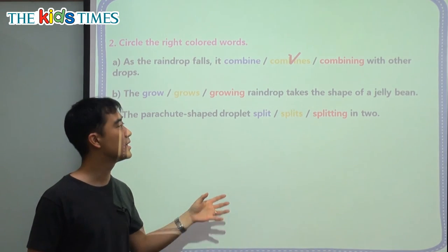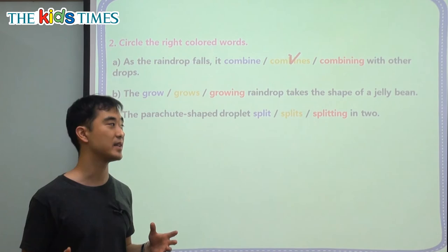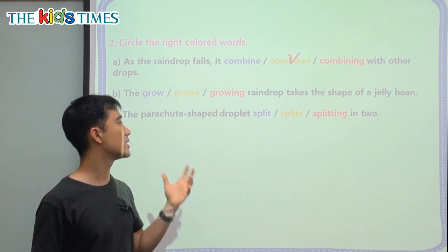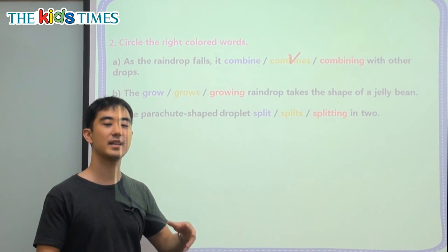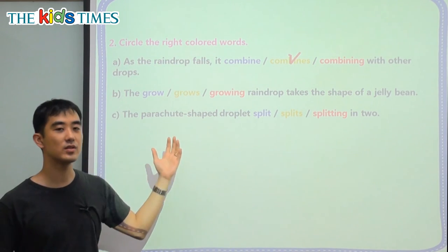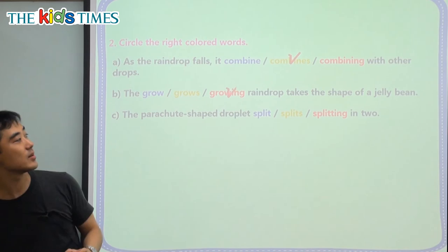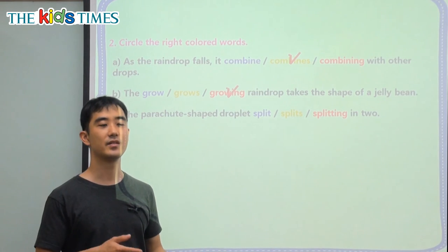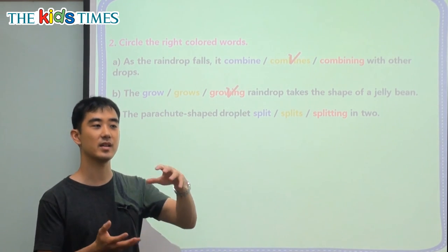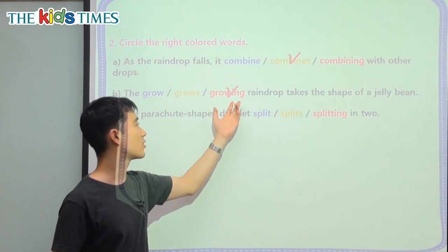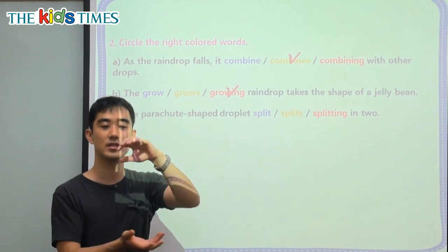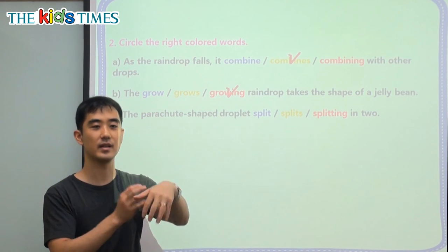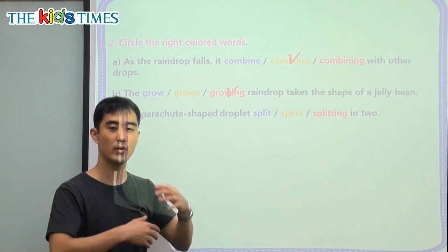B: the blank raindrop takes the shape of a jelly bean. The word 'grow' is a verb, but in this case we're going to use it like an adjective — something called a present participle, or 현재분사: 'growing raindrop.' For example, 'the changing baby' means the baby is always changing. 'The growing raindrop' means the raindrop is always growing — not just growing one time and stopping, it's always growing. So we use the continuous: growing raindrop.